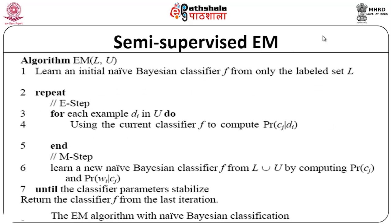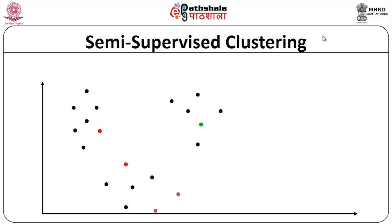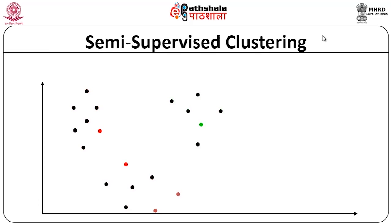Specifically: learn an initial naive Bayes classifier f from only the labeled set; for each example in the unlabeled data, use the current classifier f to compute the probability; then learn a new naive Bayes classifier using samples from the unlabeled data as well, until the classifier parameters stabilize. This process transforms unsupervised clustering into fully classified semi-supervised learning.